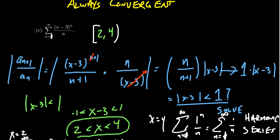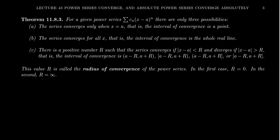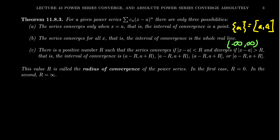These three examples provide a general picture of what happens with power series. For a given power series — the infinite sum of C_N times (X minus A) to the N — the domain will be one of three possibilities. First, the series could converge only at its center X equals A, giving domain {A}. Second, it could converge for all real numbers, giving the interval negative infinity to infinity, as we saw with the second example. Third, there could be a positive number R such that the series converges when the distance from X to the center is less than R, and diverges when it's greater than R.